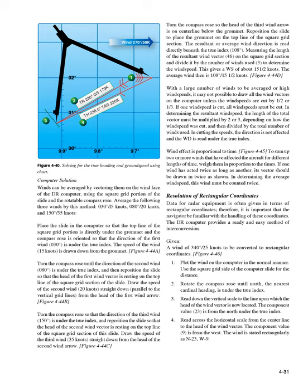With a large number of winds or high wind speeds, it may not be possible to draw all the wind vectors on the computer unless the wind speeds are cut by half or one third. If one wind speed is cut, all wind speeds must be cut. In determining the resultant wind speed, the length of the total vector must be multiplied by 2 or 3 depending on how the wind speed was cut, and then divided by the total number of winds used. In cutting the speeds, the direction is not affected and WD is read under the true index.